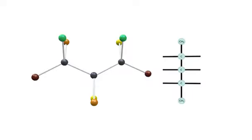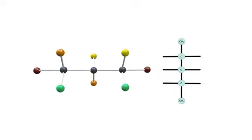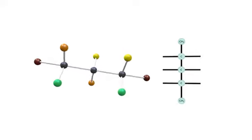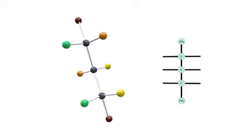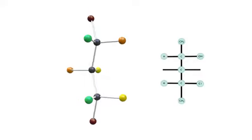The basic Fischer diagram will be this. Now we have to place the respective atoms. By rotating the complete molecule about any axis, the stereochemistry of the molecule does not change.